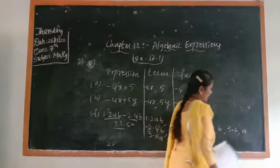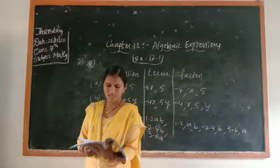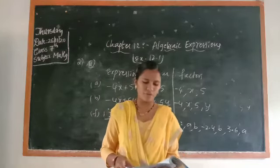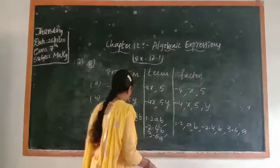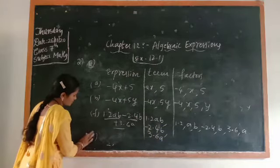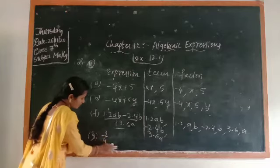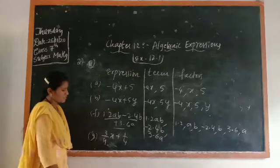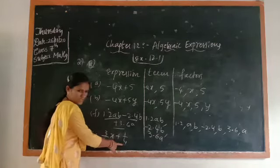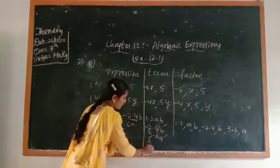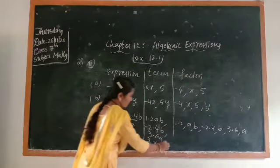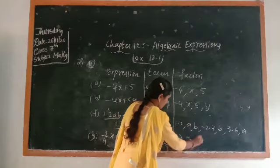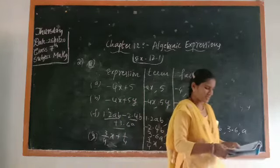Next, the expression (3/4)x + (1/4). Even though these are fractions, it is not a problem. The terms are (3/4)x and (1/4). The factors are: 3/4, x, and 1/4. That is how you separate expressions into terms and factors.